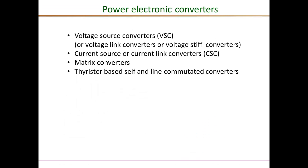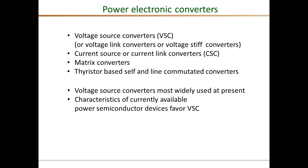From a circuit topology point of view, power electronic converters can be broadly classified as: voltage source converters (VSC), also known as voltage link converters or voltage stiff converters; current source converters or current link current stiff converters; matrix converters; and the earlier thyristor-based line commutated converters. Of these, the voltage source converters are by far the most widely used type for almost all power electronics applications.